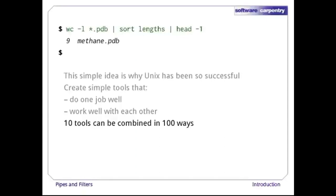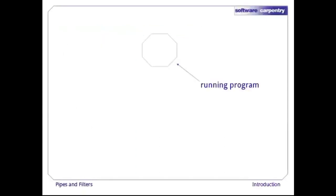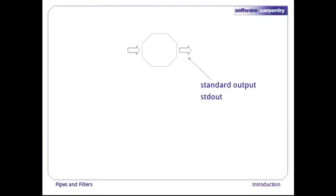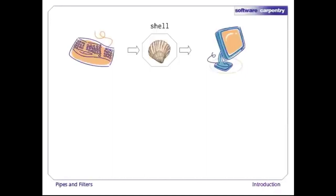Here's what actually happens behind the scenes when we create a pipe. We'll use an octagon to show a running program — the technical term for this is a process, a program that's actually loaded into memory and live. Every process has at least one input channel called standard input, or stdin. Every process also has a default output channel called standard output, or stdout. When we run a program normally, the shell temporarily sends whatever we type on our keyboard to the process's stdin, and sends whatever the process prints to stdout to our computer's screen.